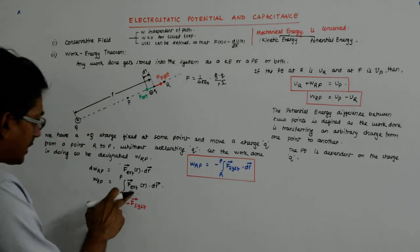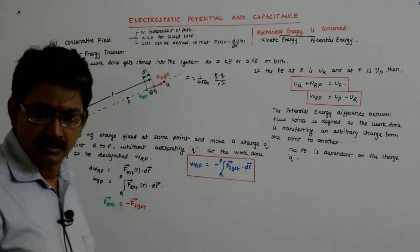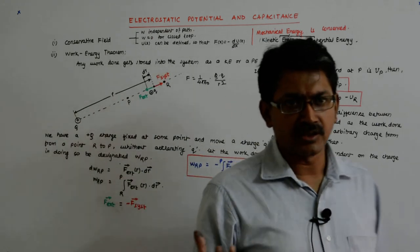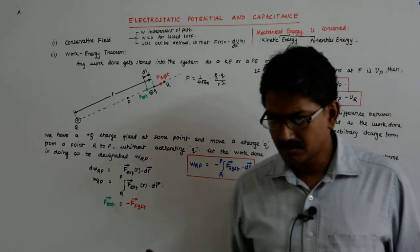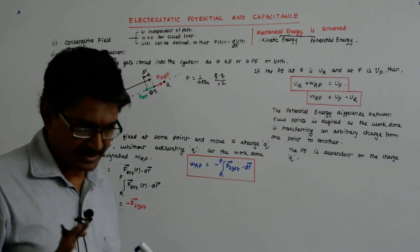Since the force is double and the displacement is the same, the whole potential energy difference will become double. Do we understand that point?